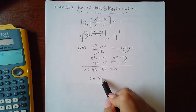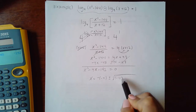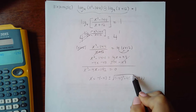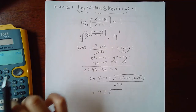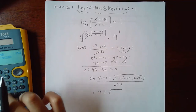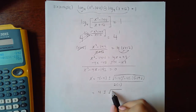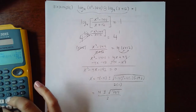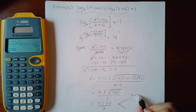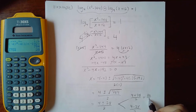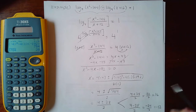Using the quadratic formula — negative b plus or minus the square root of b squared minus 4ac, all over 2a — I get: negative 4 squared minus 4 times 1 times negative 192 equals 784. The square root of 784 exists, giving us 4 plus or minus 28. So the two answers are: 4 plus 28 over 2, which is 16, and 4 minus 28 over 2, which is negative 12.